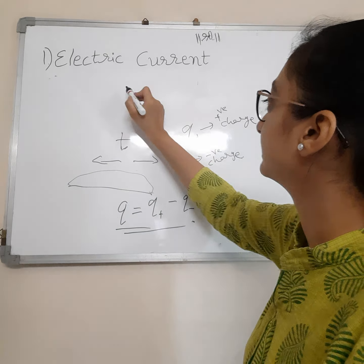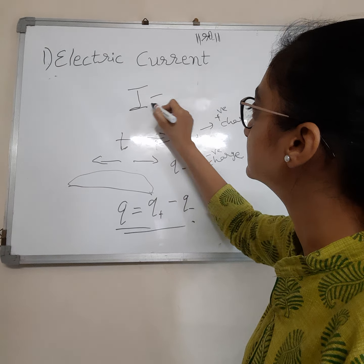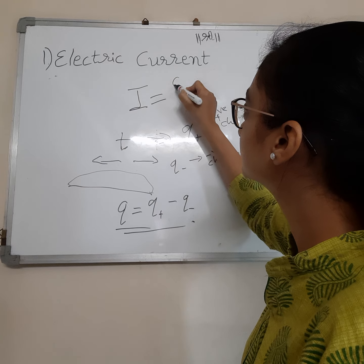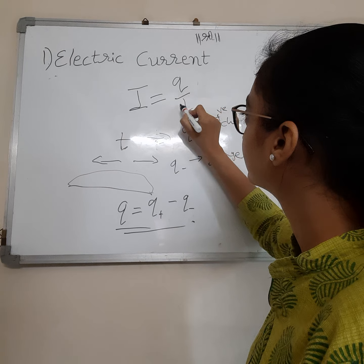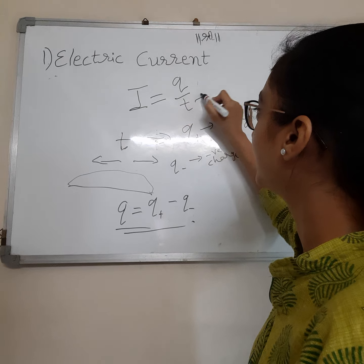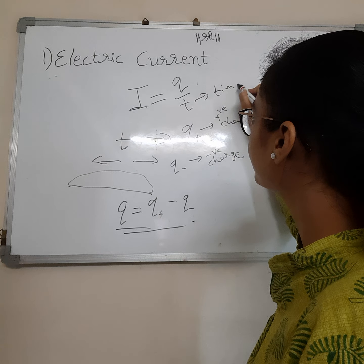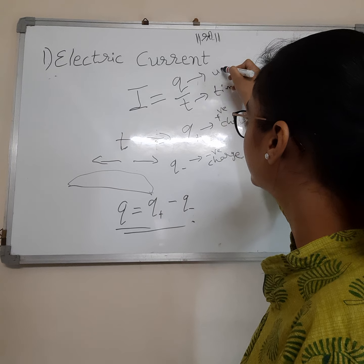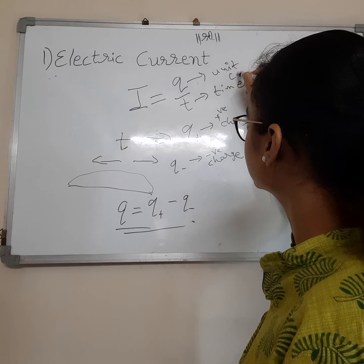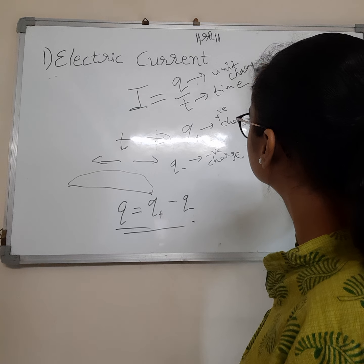Now we see an image of a surface carrying current, or we can say a surface carrying charge — positive charge and negative charge both, and forward and backward directions both. For time interval T,